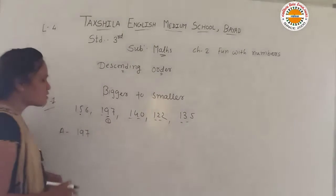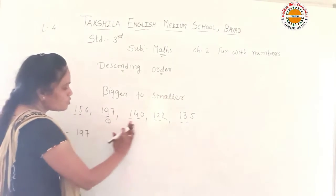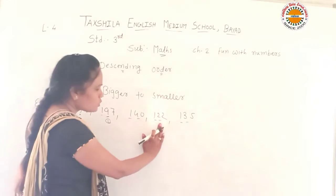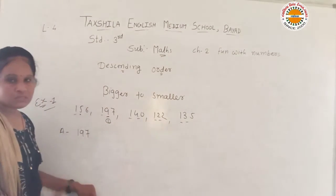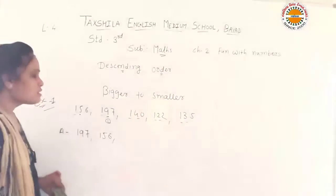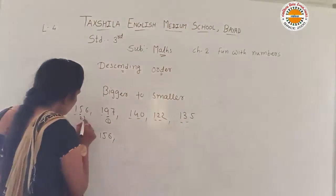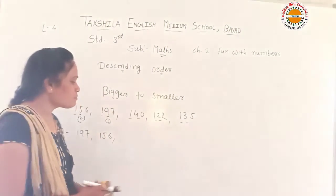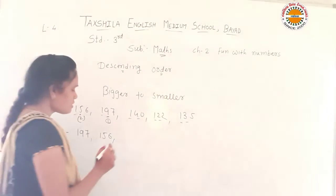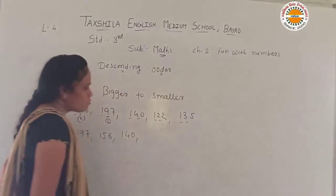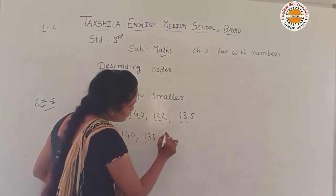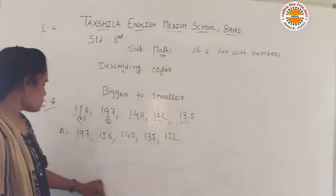197 is our first number. Now we have 4 numbers left. Again, looking at the tens place: here we have 4, here we have 3, here we have 3. 156 — now we have two numbers. We have three digits: two and three. So this is one hundred forty.